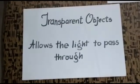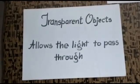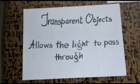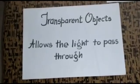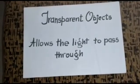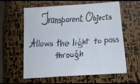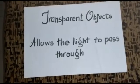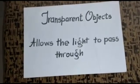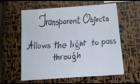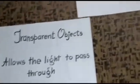Let's revise what we have learned today. We learned about transparent objects that allow the light to pass through them. For example, glass and clear water.